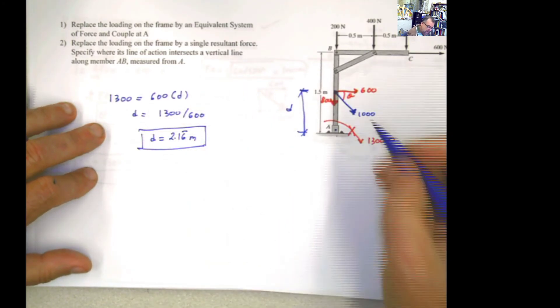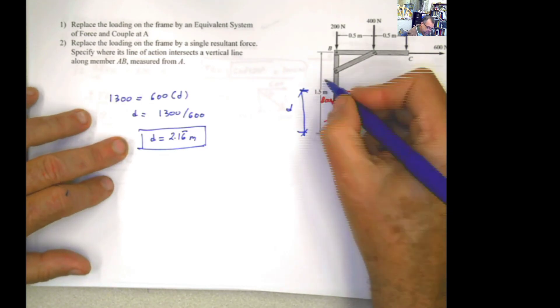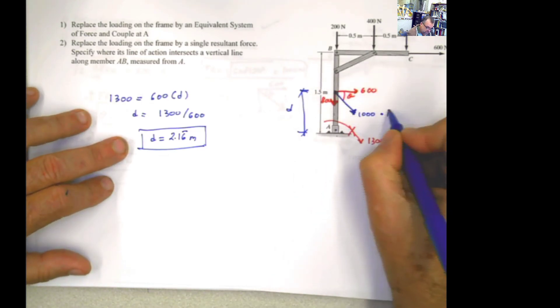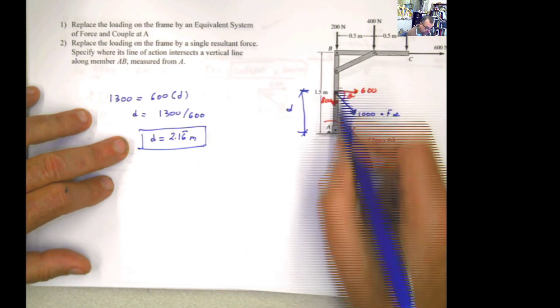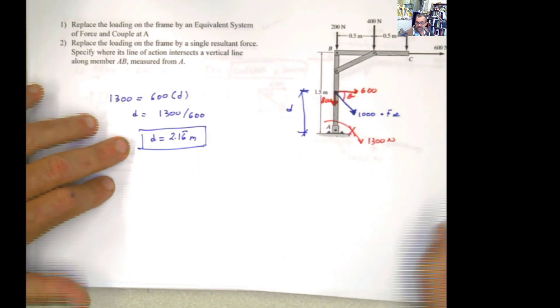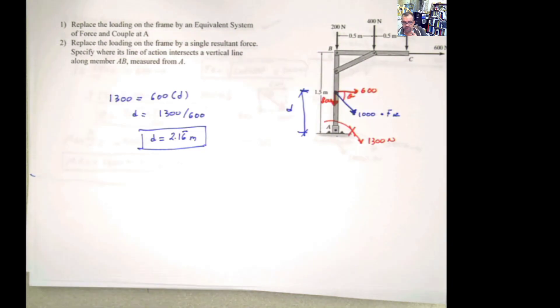The second answer will be, I need to place the resultant force that I calculated before in the same direction that I calculated before at a distance of 2.16 periodic measure from the point A. I hope you like it. Thank you for watching. And keep watching, guys.